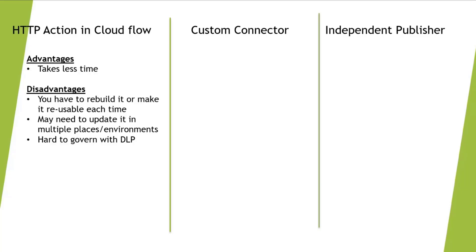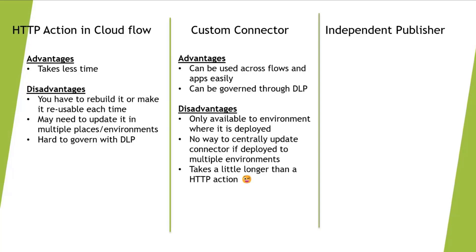If you have an API that you're consuming data from regularly, you might want to make a custom connector. A custom connector can be used across flows and Power Apps very easily, and it can be governed specifically through DLP. However, it's only available in environments where it's deployed. For a small organization with dev, test, and prod, deploying to three environments is fairly straightforward. But if you have dozens or hundreds of environments, it becomes more problematic. There's no central way to update the connector if it's deployed across multiple environments — you have to redeploy each time you make a change or bug fix. It also takes a little longer to write than a regular HTTP action.